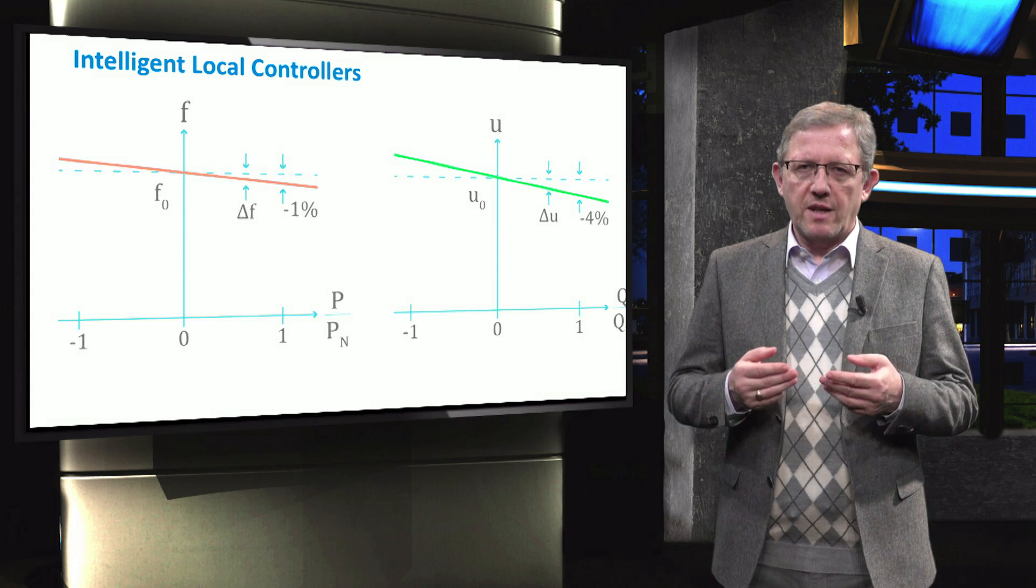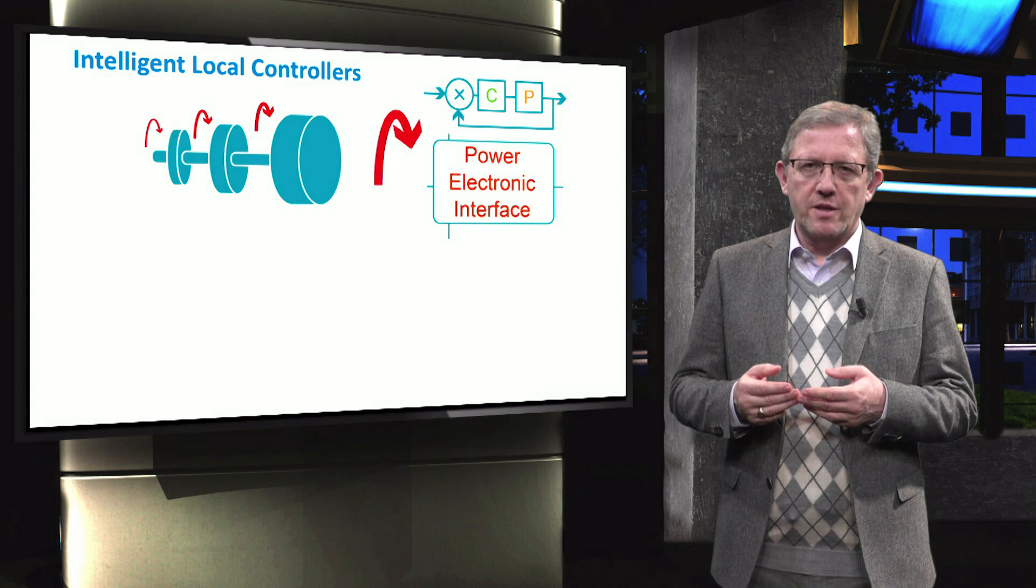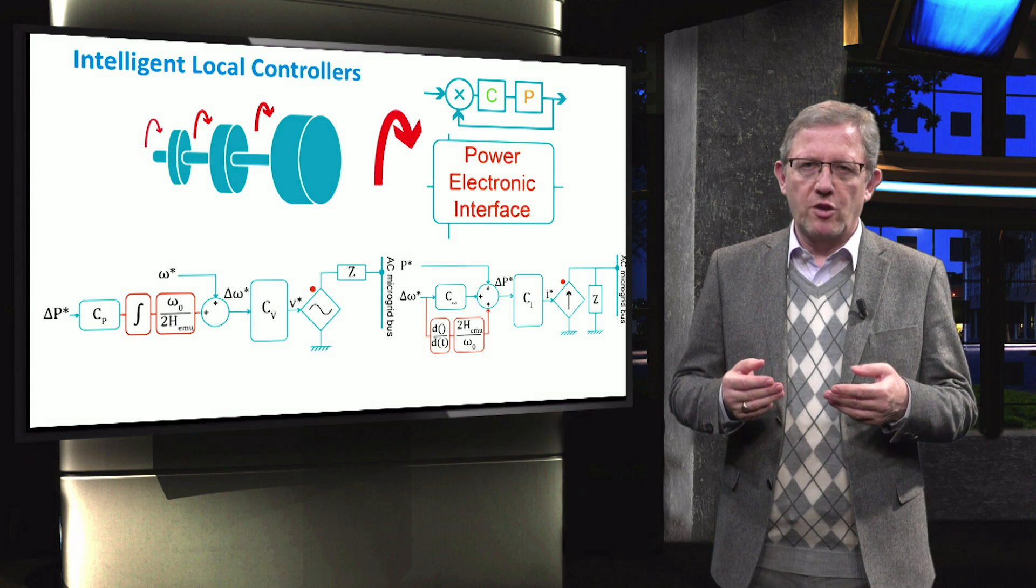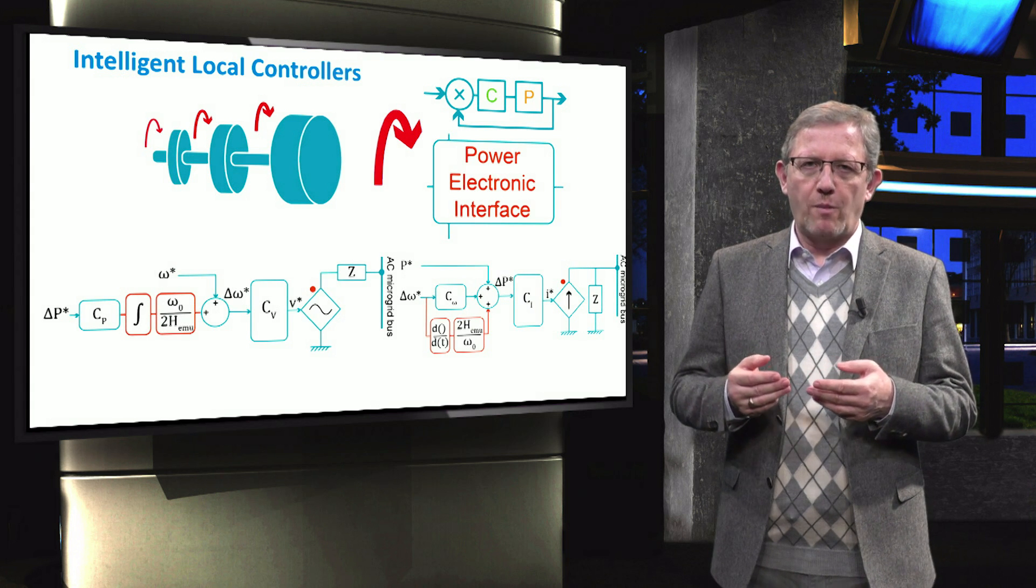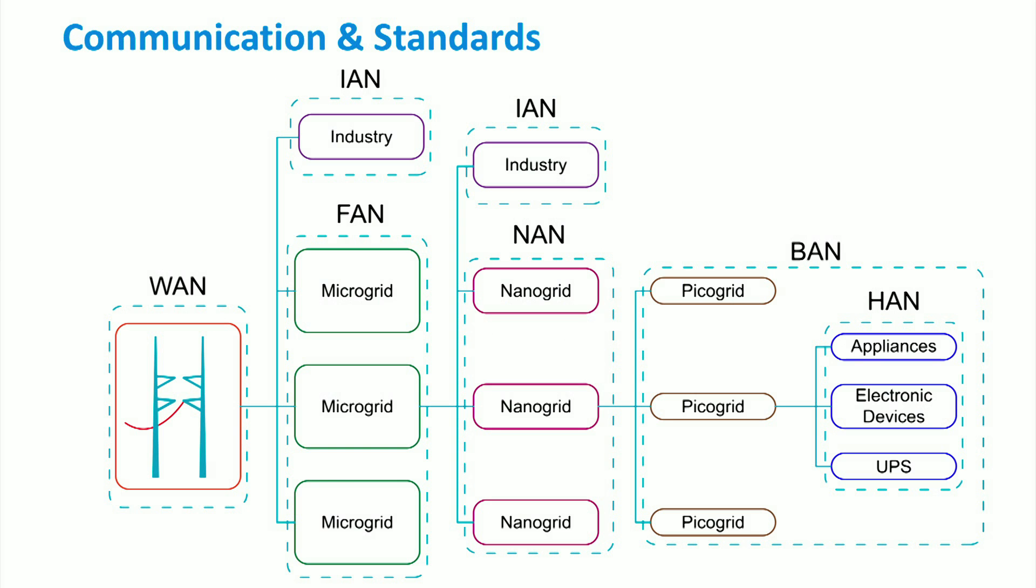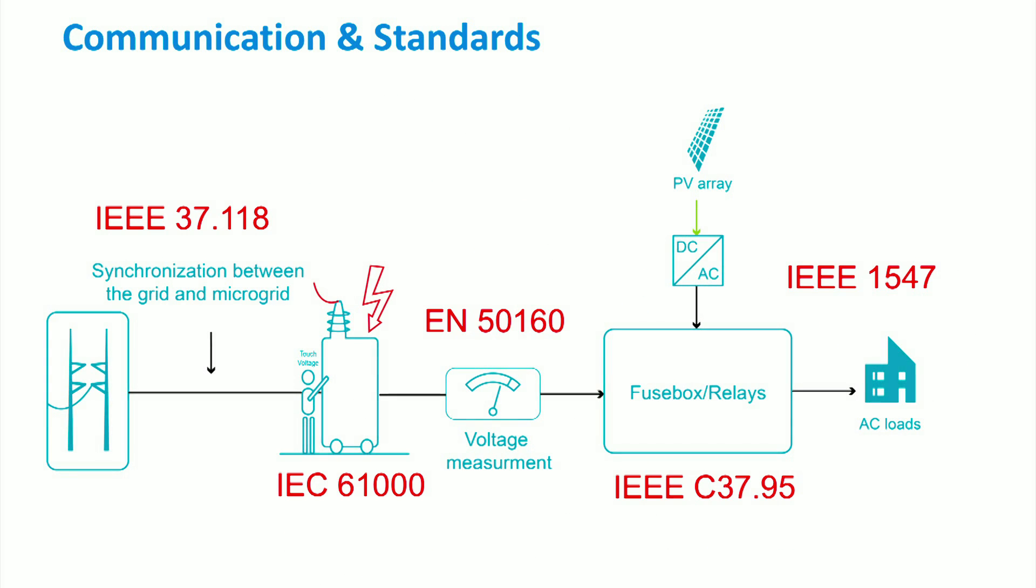We also discuss additional auxiliary controllers like virtual inertial emulation loops, which help improve the stability of microgrids. You will also learn about the communication links that are required from nanoscale home area networks to wide area networks. We will review various communication schemes at different control levels and address some standards which are applicable in microgrids.